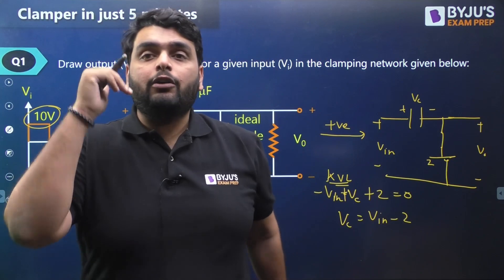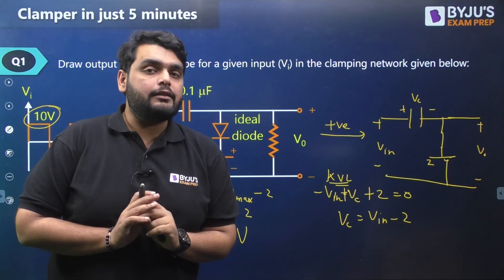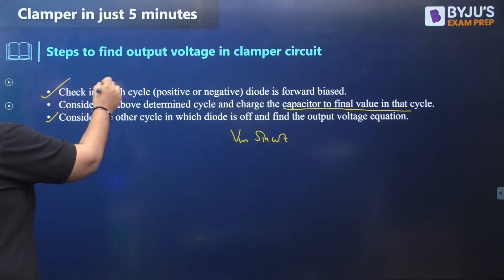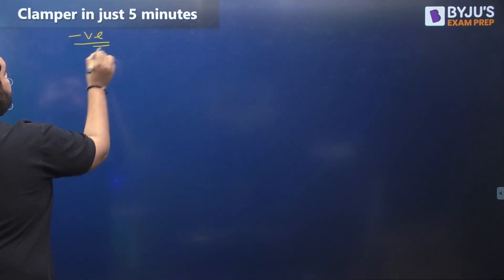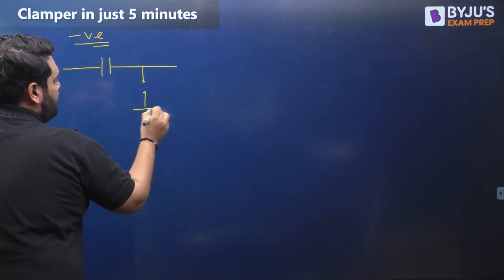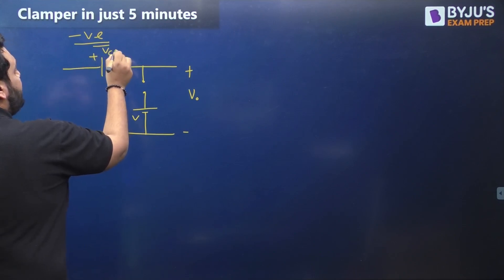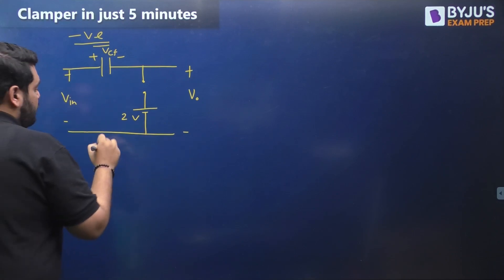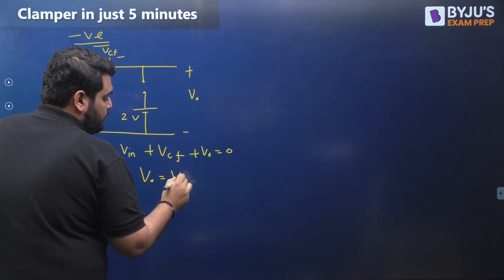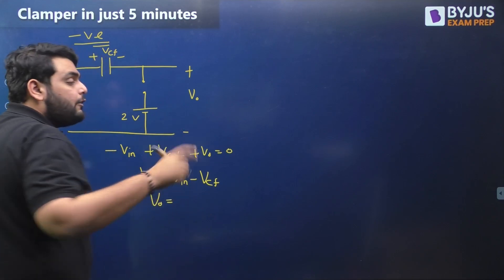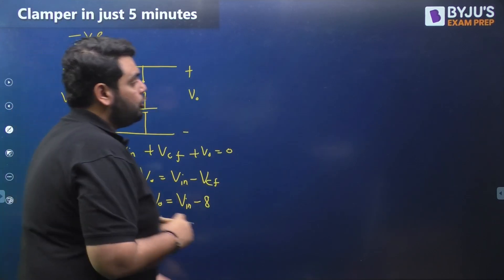Now consider the negative half cycle where the diode is off. Applying KVL: minus Vin plus Vcf plus Vout equals zero, so the output voltage Vout equals Vin minus Vcf. Since Vcf, the final stored capacitor voltage, is 8 V, the output voltage equation becomes Vout equals Vin minus 8.